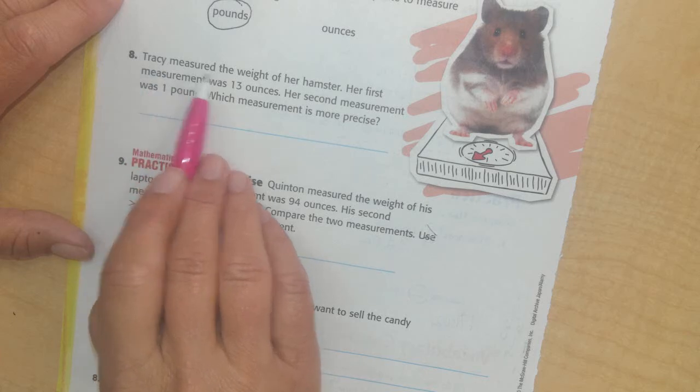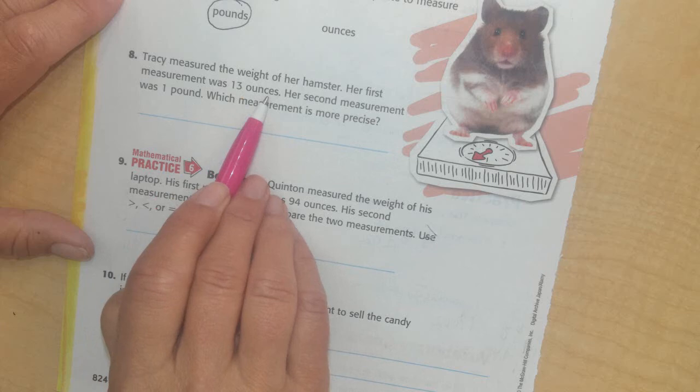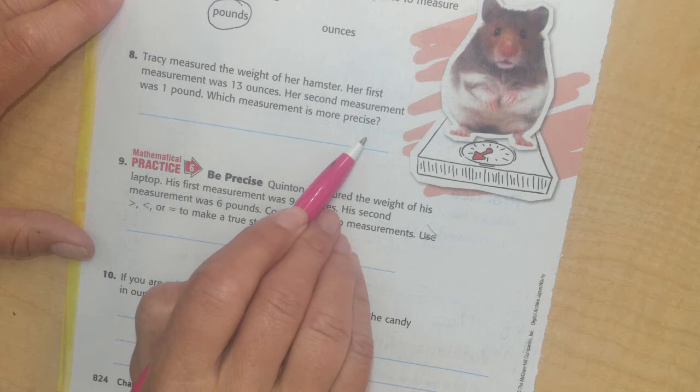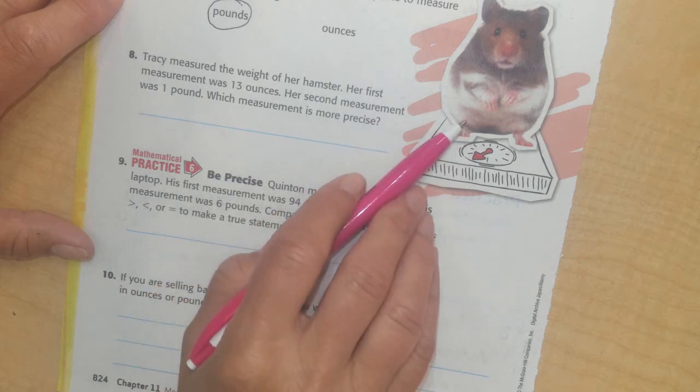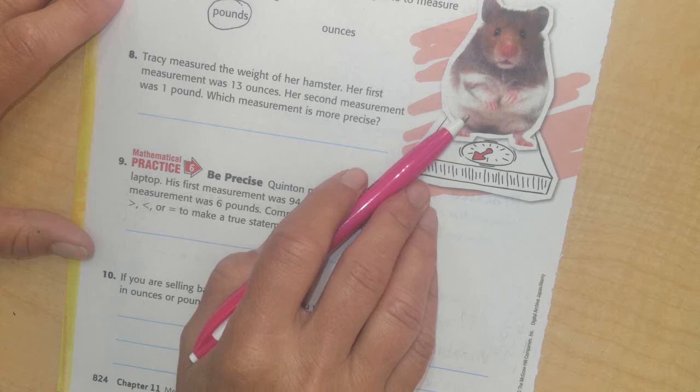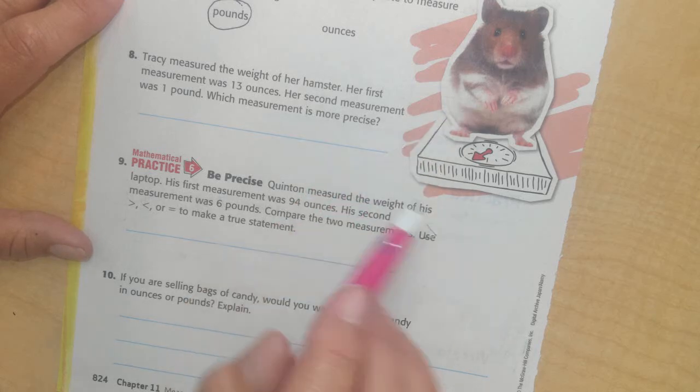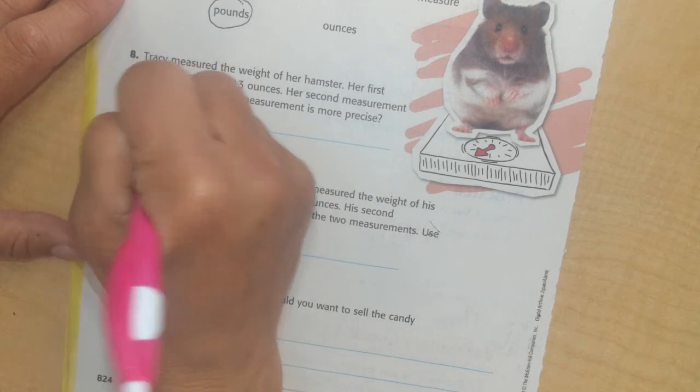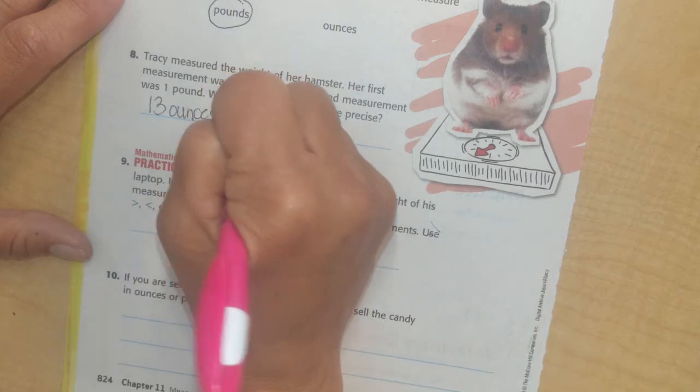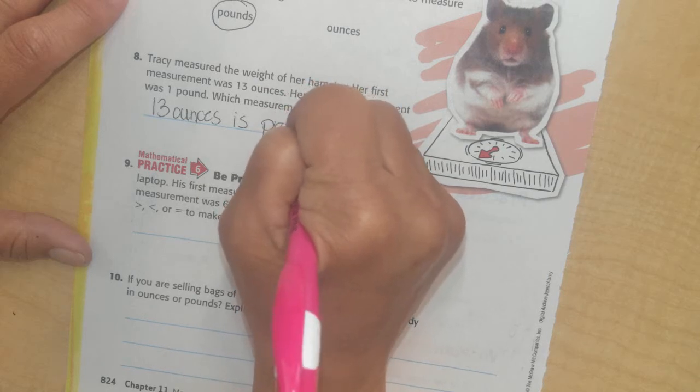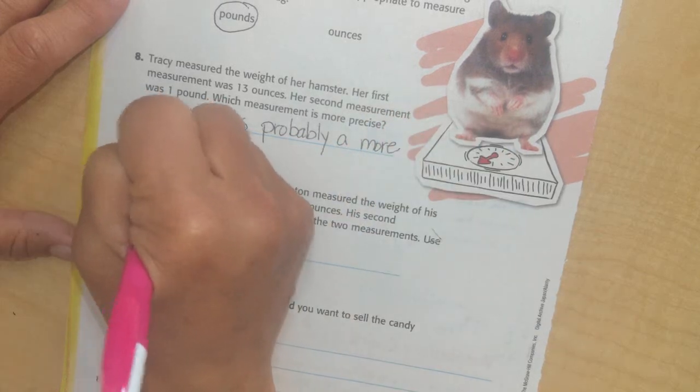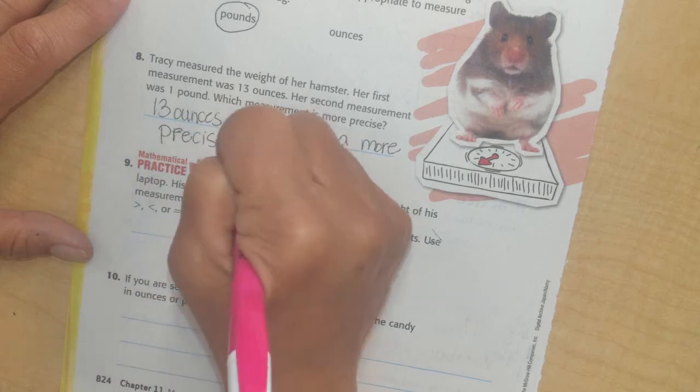Alright, so Tracy measured the weight of her hamster. Her first measurement was 13 ounces, her second measurement was one pound. Which measurement is more precise? I'm going to say the 13 ounces than the one pound. If I put it on a scale that measures pounds, if it doesn't weigh a whole pound, it's going to just tell me one. It doesn't normally tell me zero. But I'm going to say 13 ounces, I don't know for sure, is, I'm going to use this word,